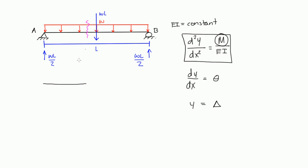We take a cut between A and B and redraw that piece. The cut piece has part of the distributed load and the reaction wL/2. I'll call the cut distance x. The internal moment — remember if you cut a span and look at the left side, the sign convention creates a smiley face moment.